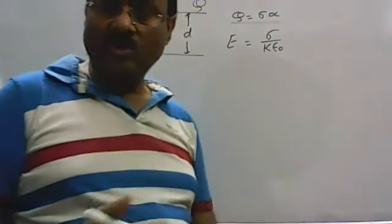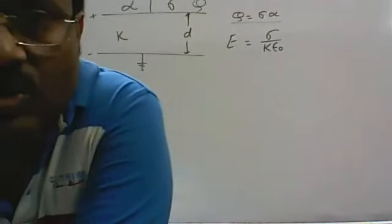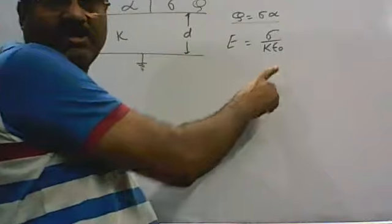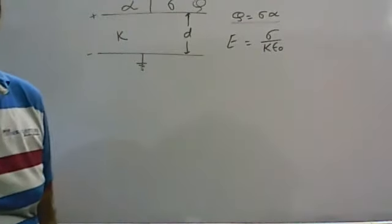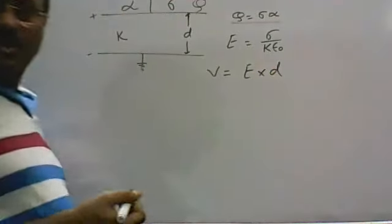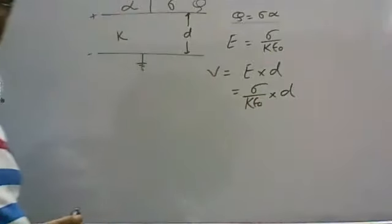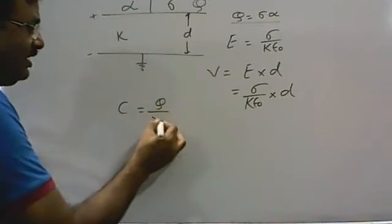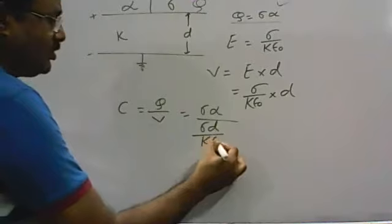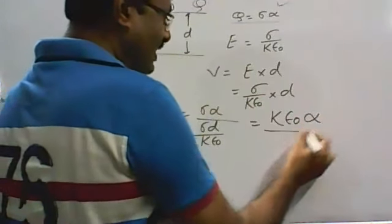E is equal to sigma by k epsilon_0. So when we write it, we have K into epsilon_0. D is D into D. By D.